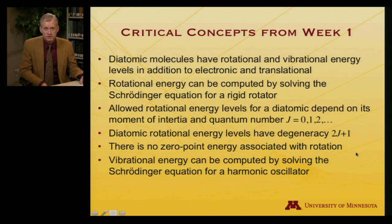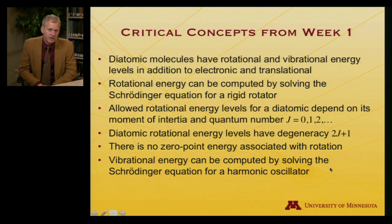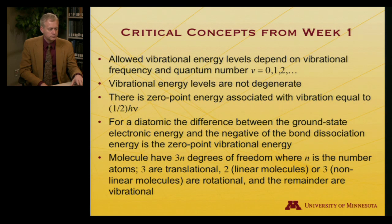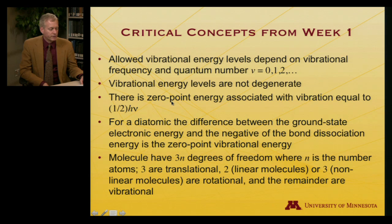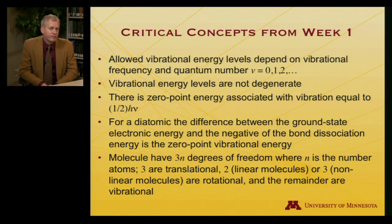The ground state rotational energy is 0. Vibrational energy is computed by solving the Schrödinger equation for a harmonic oscillator. The allowed vibrational energy levels depend on the vibrational frequency and a quantum number v, which begins at 0, 1, 2, and so on. Vibrational energy levels are not degenerate. There is zero point energy associated with vibration — it's equal to one-half Planck's constant times the frequency of the vibration.